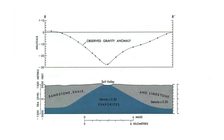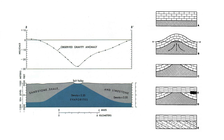As the sediment became more dense than the salt beneath it, the salt began to flow to areas of lower pressure, forming domes and ridges, as well as anticlines — layers of sedimentary rock folded over like arches.